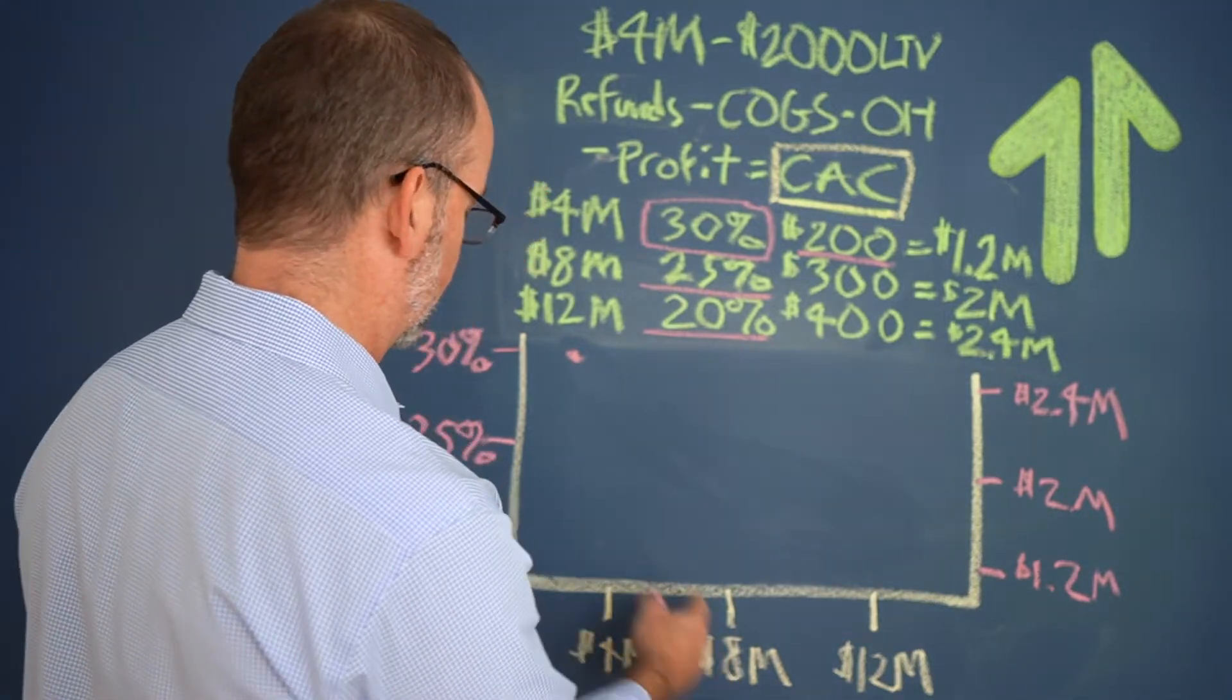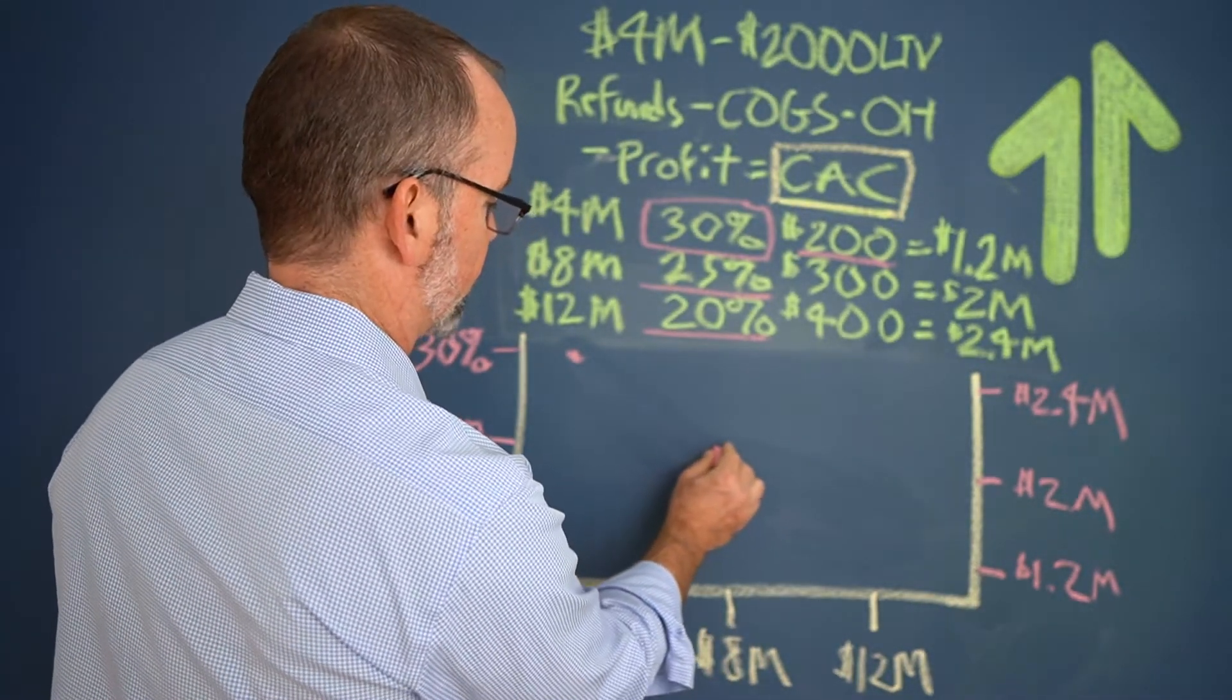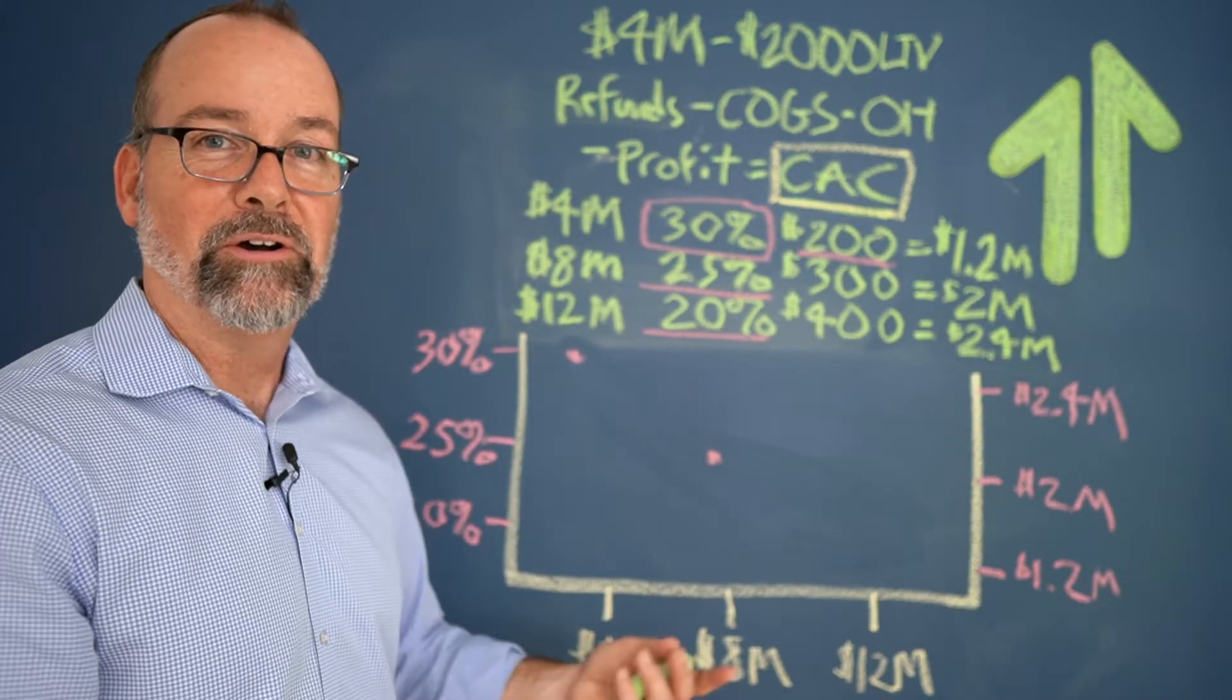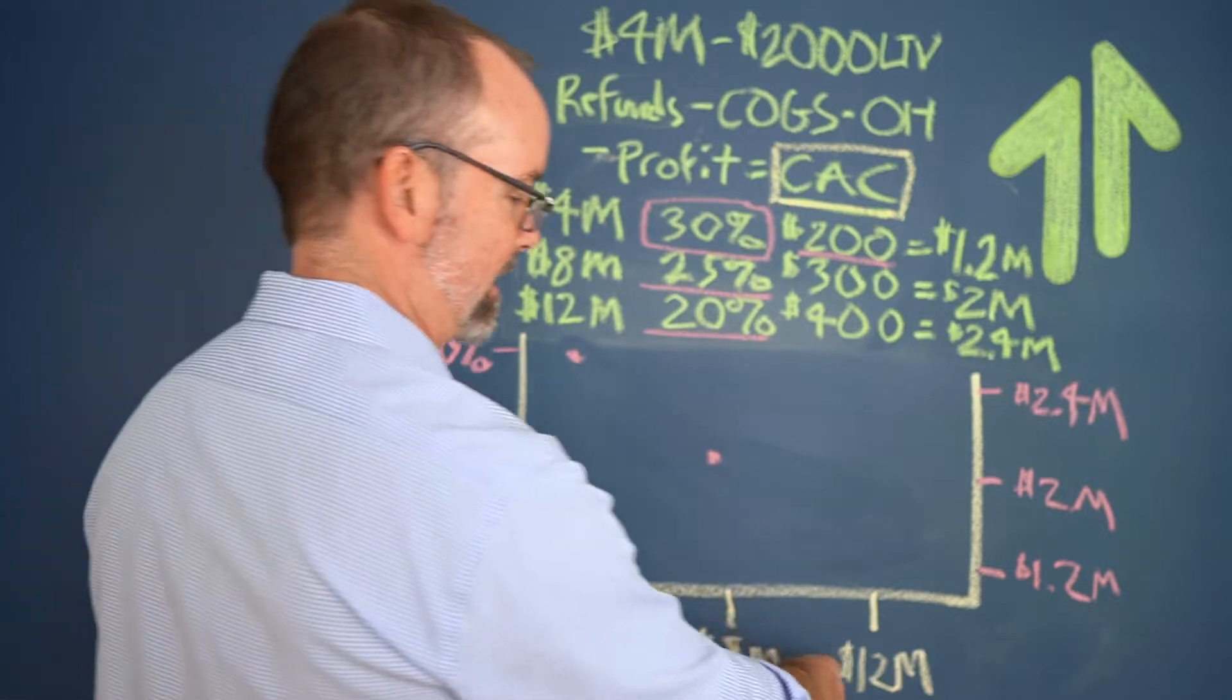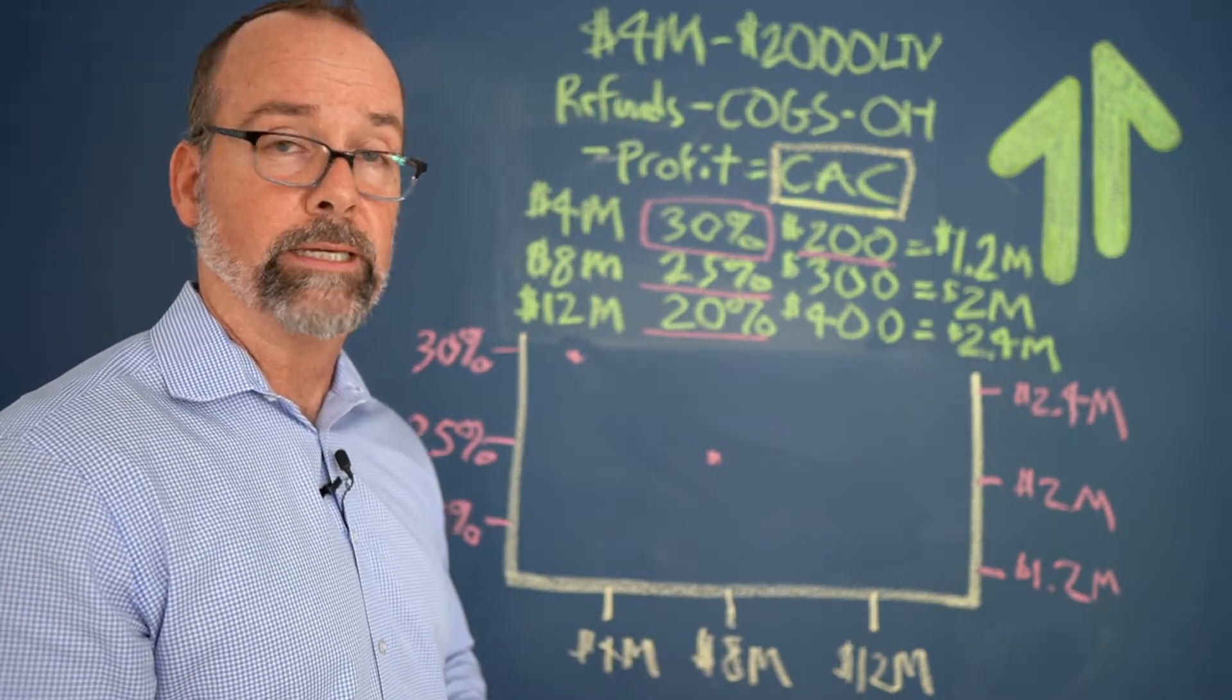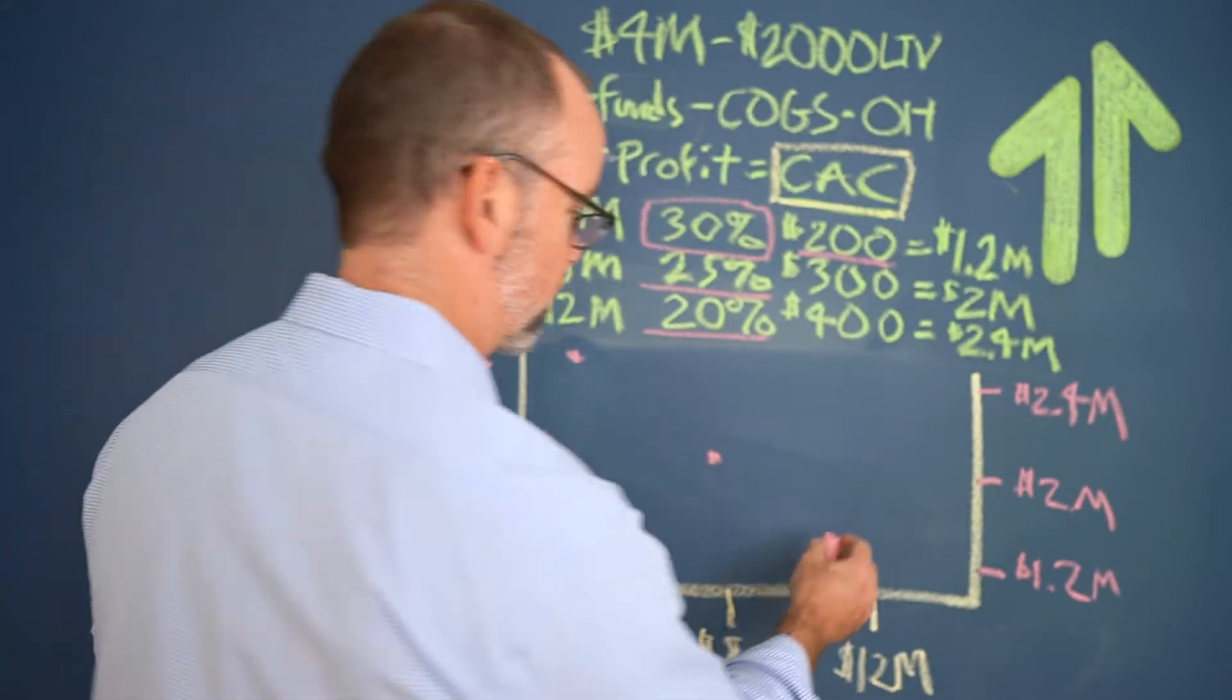As they grow to $8 million, maybe they lowered their expectation to a 25% profitability goal, which is completely in line. In fact, this is almost a perfect model for Tier 11 here as a service based business. But we see this a lot in our agency as well. And as they scale and they triple their size from $4 million to $12 million, they need to reset that profitability goal down to a lower figure, which is then 20%.